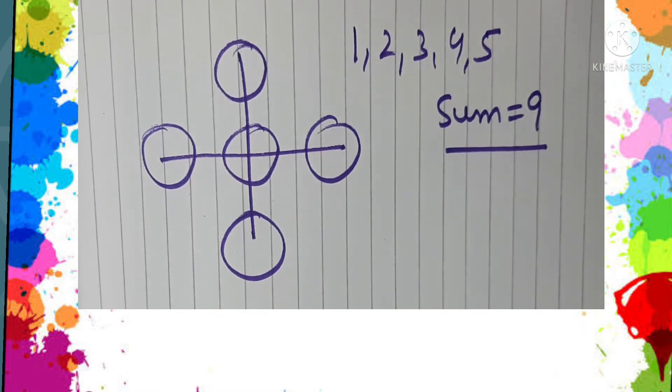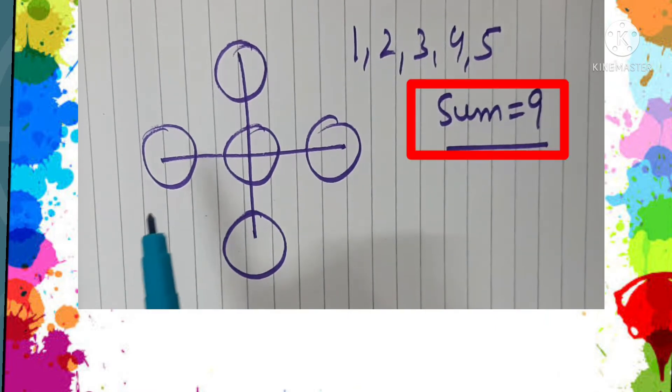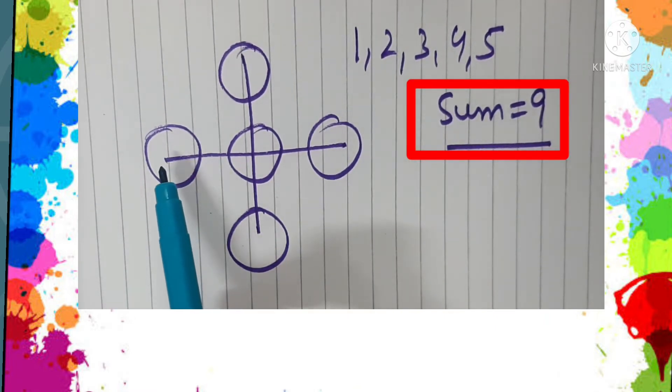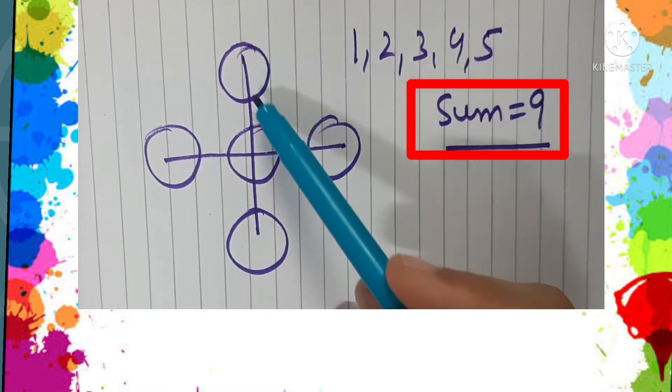We are given the digits 1, 2, 3, 4, and 5. These digits are to be placed in these circles so that the sum of the digits on the horizontal line and the sum of the digits on the vertical line remains the same.